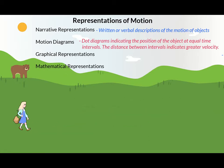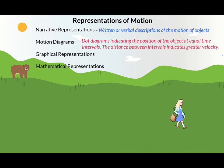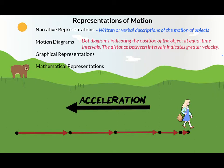Now imagine that while Amber is running, she slows to a stop. Her velocity steadily decreases in the same direction she's moving, but the acceleration is opposite her direction of motion. This is a case of positive velocity with negative acceleration.